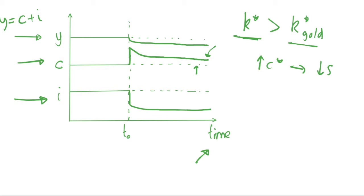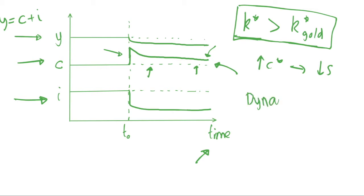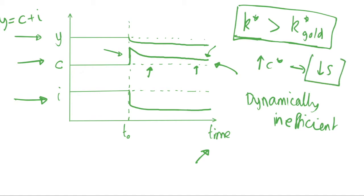Consumption is our end goal because we get utility from it, and at every point in time the new level of consumption is above our original level — we're always above the dotted line from now on. This means that if k* is greater than k* gold, we are dynamically inefficient. By decreasing the savings rate we can increase consumption at every point in time.